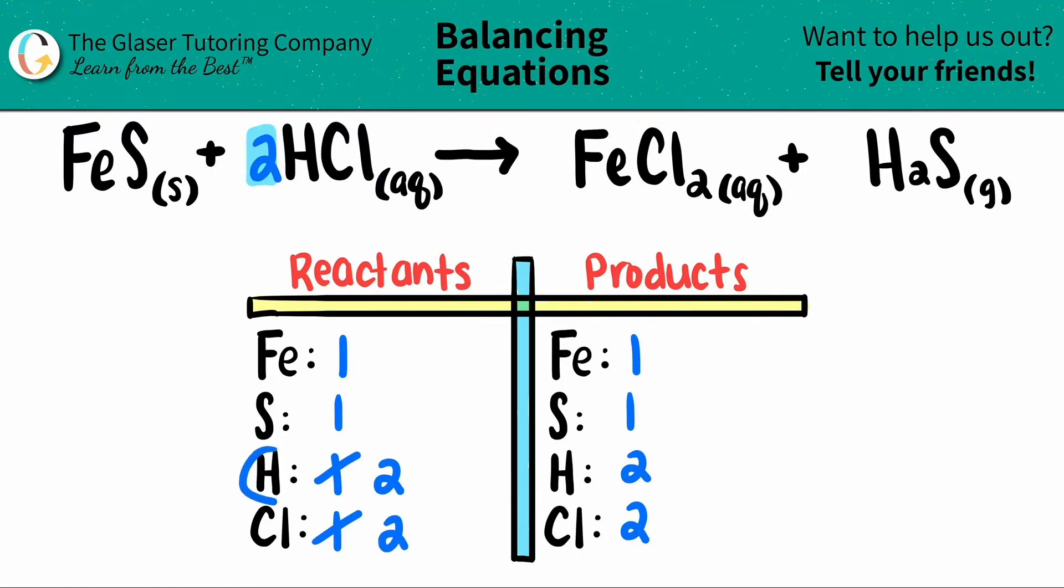And look at that. By just balancing the hydrogen, I actually balanced the chlorine. That's the beauty of balancing. Sometimes you'll get a two for one deal. So we're good. Everything else is balanced. One iron is on both sides, one sulfur on both sides. So everything is good.